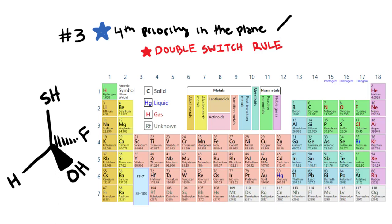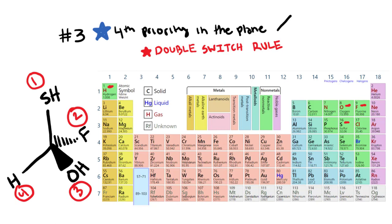In the third and final scenario, the fourth priority group is in the plane. We assign priorities: looking at sulfur, fluorine, oxygen, and hydrogen. Sulfur wins first priority at 16, then fluorine at 9, then oxygen at 8, and last priority is hydrogen at 1. The fourth priority group is in the plane.